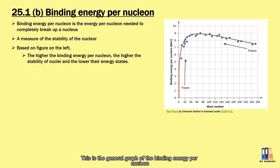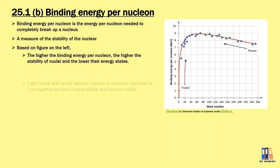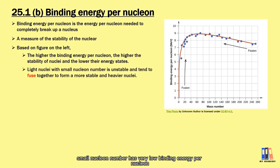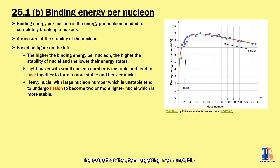This is the general graph for binding energy per nucleon versus nucleon number (mass number). We can see that lighter nuclei with small nucleon numbers have very low binding energy per nucleon — they are not stable and tend to undergo fusion to form heavier, more stable nuclei. For nucleon numbers greater than 80, the binding energy per nucleon is decreasing, indicating the atom is becoming more unstable.